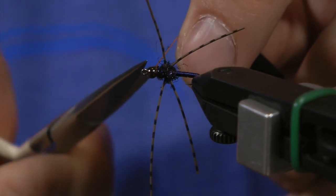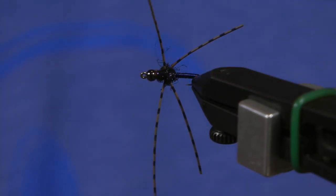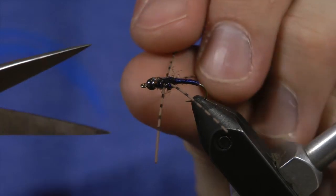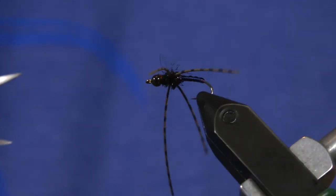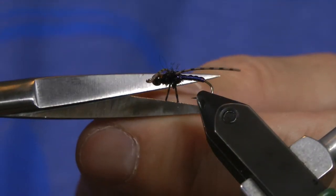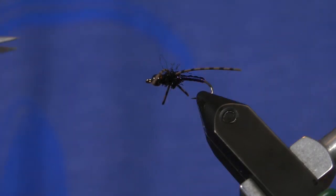Once that's done, that adhesive actually locks down the thread, and then we can cut these legs off approximately the same width there.